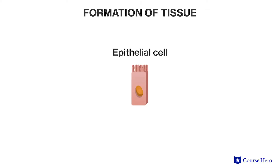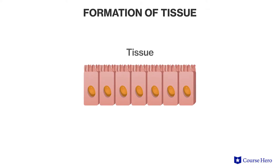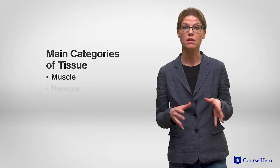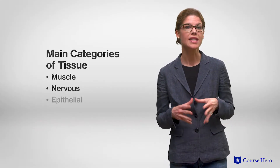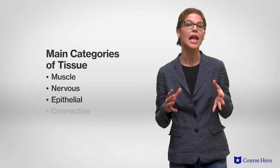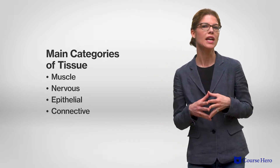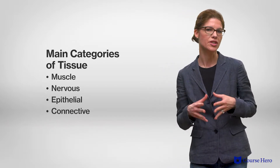The body of a multicellular organism is a complex and organized system made up of specialized cells. Cells with the same function come together to form tissues, of which there are four main categories: muscle, nervous, epithelial, and connective tissues. Let's take a closer look at each one of these in turn.